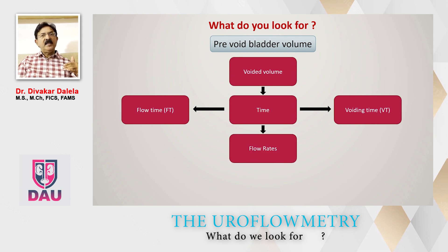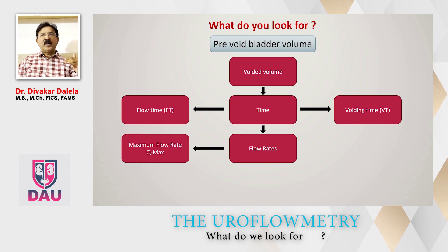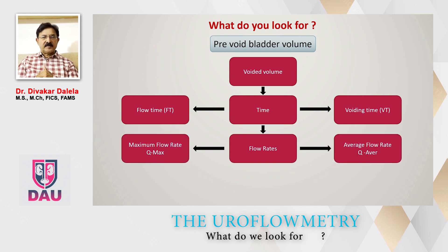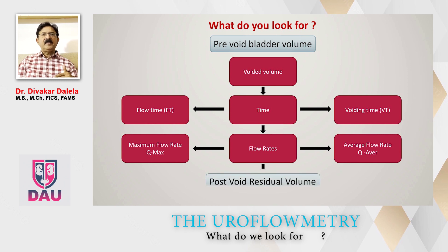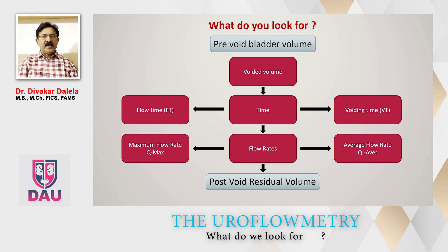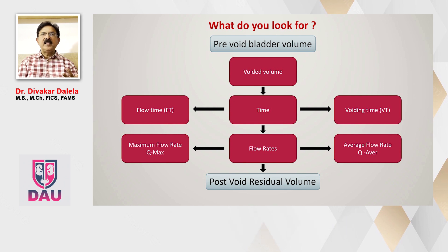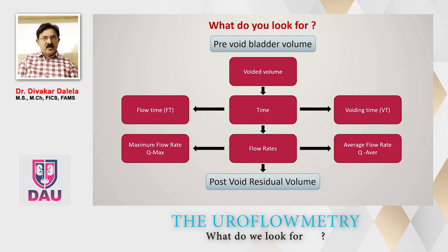Then we see what have been the flow rates. Flow rates means what is the maximal flow rate, it is called Q max. And then what has been the average flow rate, which is called Q average. So we look for these objective parameters in that graph. And once the patient has finished voiding, we always do a repeat bladder scan to check what is the post-void residual urinary volume. So this triad makes a complete flowmetry test: pre-void bladder volume, active voiding recorded by these data, and then post-void residual urinary volume.